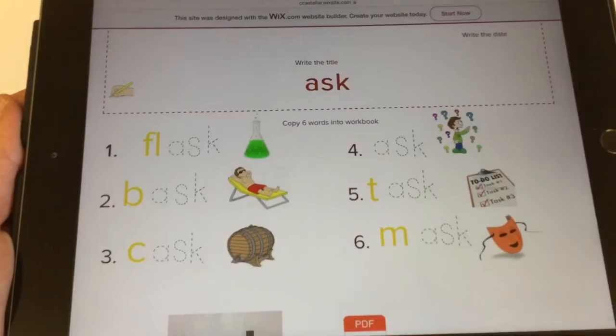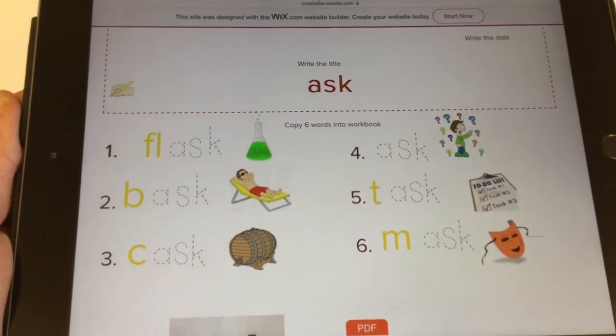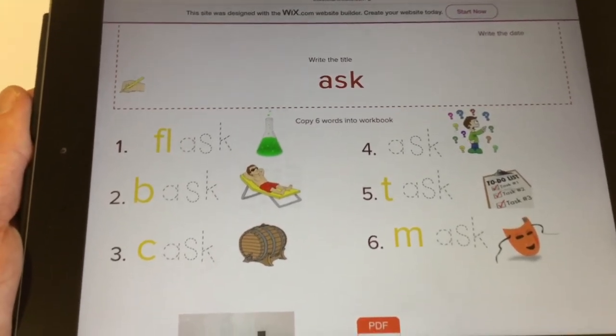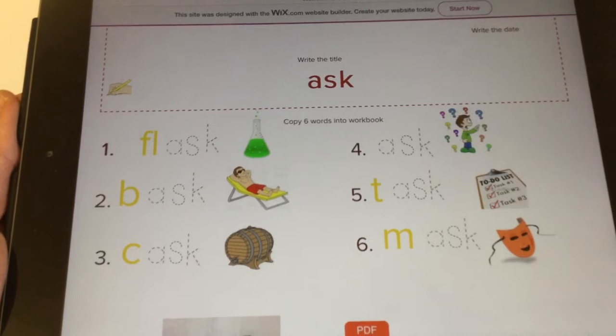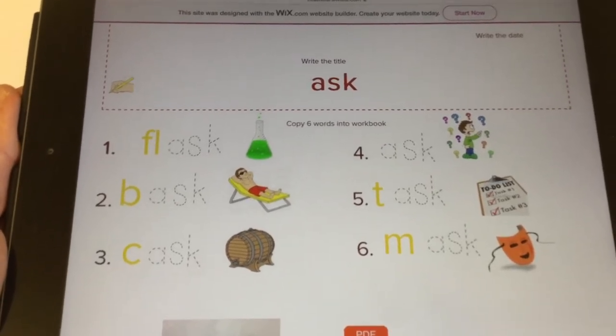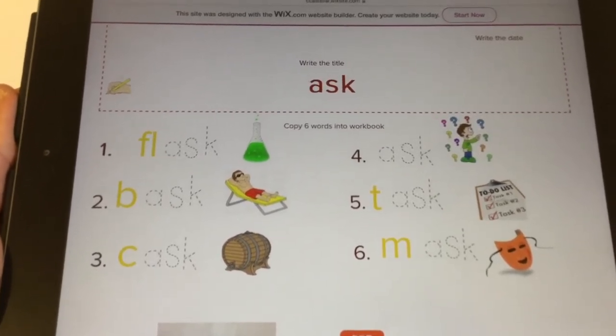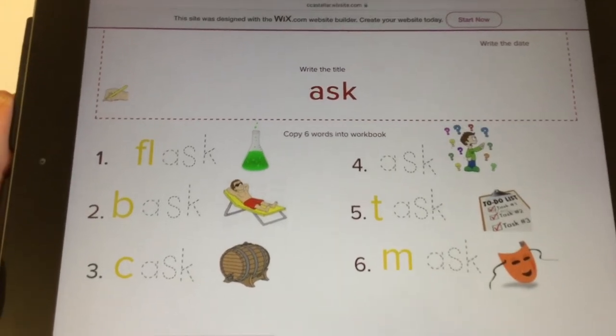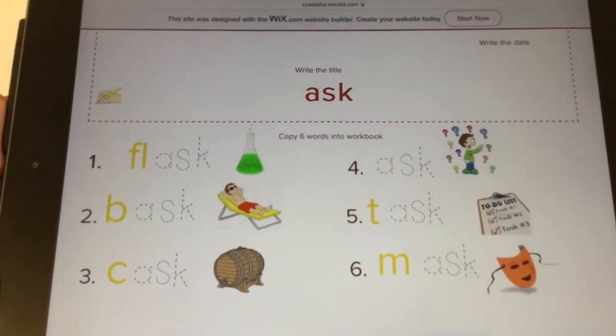We have words like flask, that's a container to hold something. Bask, that's to lie in the sun. Cask, it's a wooden barrel. Ask, like ask a question. Task is another word for a job to do. And mask, like you might wear at Halloween.